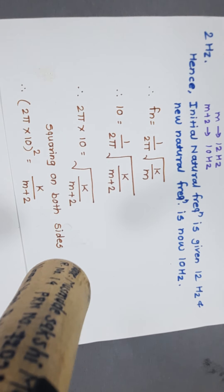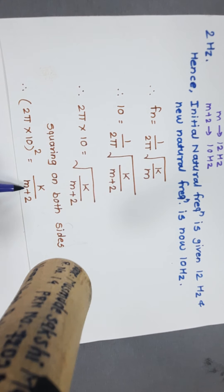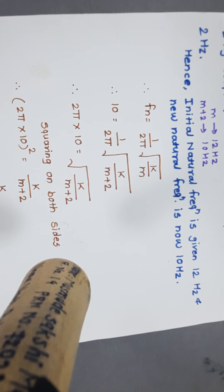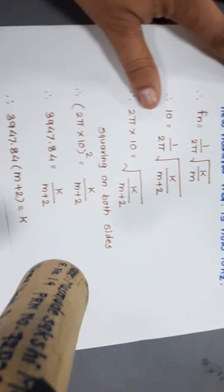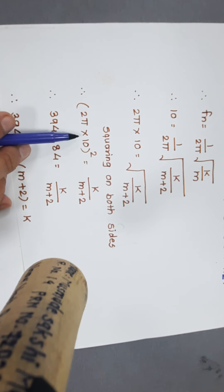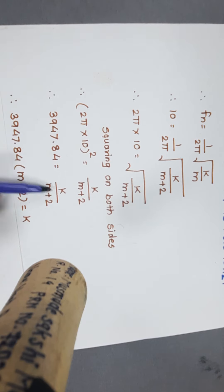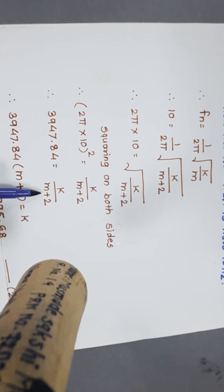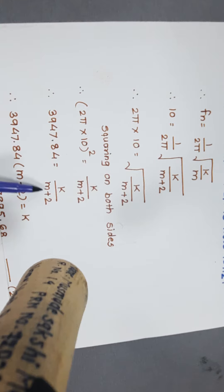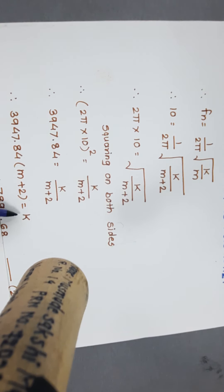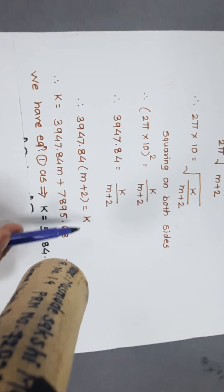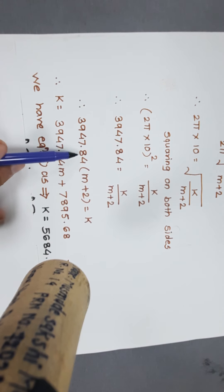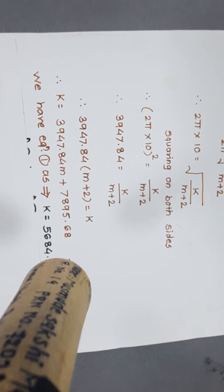Squaring both sides: (2π × 10)² = k / (m + 2). Solving this bracket gives 3947.84 = k / (m + 2). Therefore k = 3947.84 × (m + 2), which expands to k = 3947.84m + 7895.68. This is equation number 2.